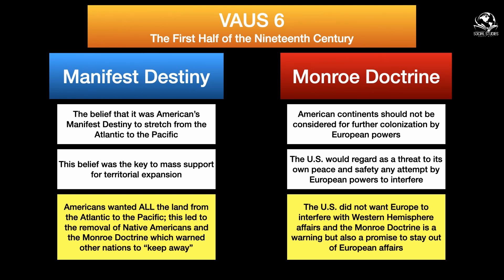America begins as a colony belonging to England, so at this point the leadership does not want England, France, Spain, or any other European power coming over and colonizing in North America — because it's America's manifest destiny to own all that land. That leads to the Monroe Doctrine. James Monroe, an American president, issues a statement saying American continents should not be considered for further colonization by European powers, and the U.S. will regard any attempt by European powers to interfere as a threat to its peace and safety — not just in North America, but South America and the entire Western Hemisphere.